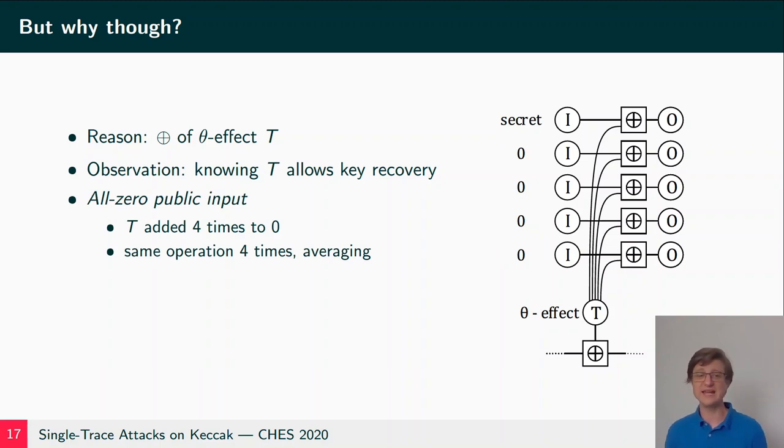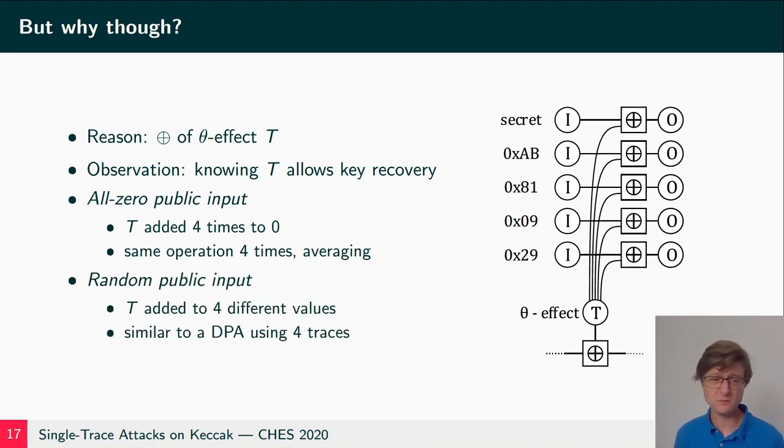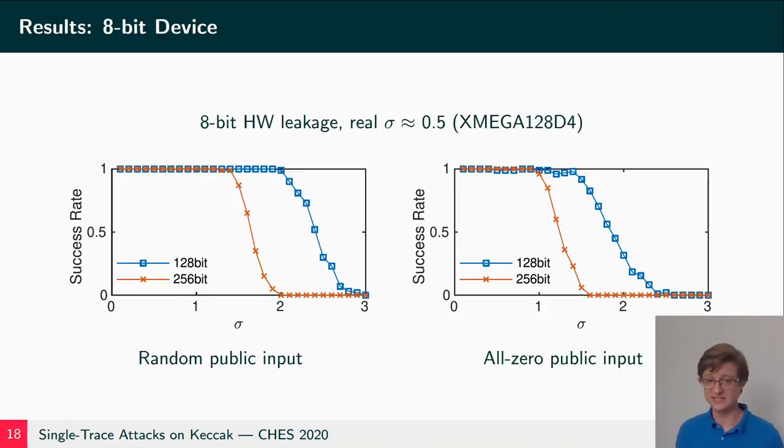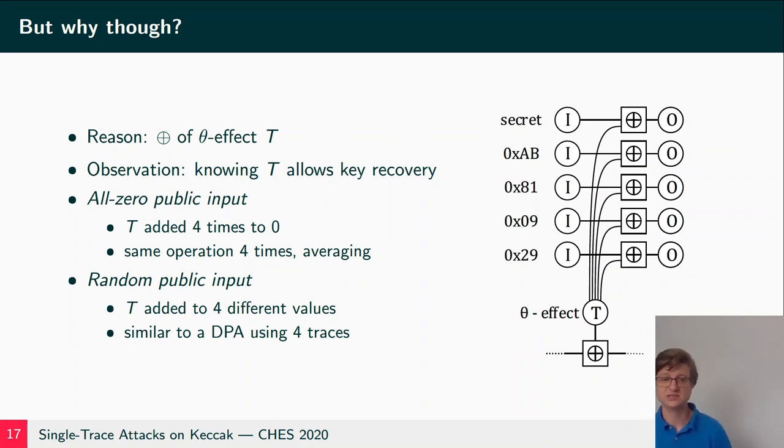So you don't get a lot of information from this XOR. Now in the random public input, we add this T to four different values. So this is kind of like a DPA which uses four traces and gives us a lot more information than just this averaging. And this is one reason why this random public input scenario works a lot better.